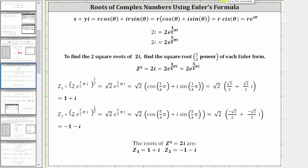We will call the two roots z sub one and z sub two, where we have raised both exponential forms for two i to the one half power. Simplifying, we raise two to the one half power, which gives us the square root of two. Then for e raised to the power of one half pi i, we multiply the exponent by one half, which gives us e raised to the power of one fourth pi i.